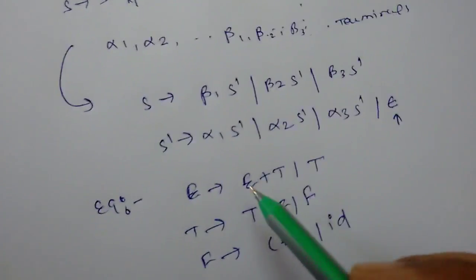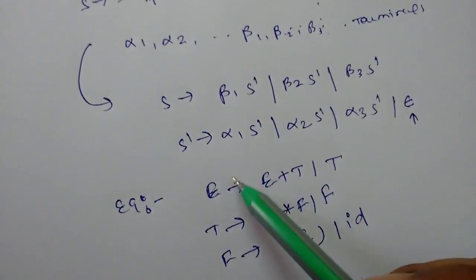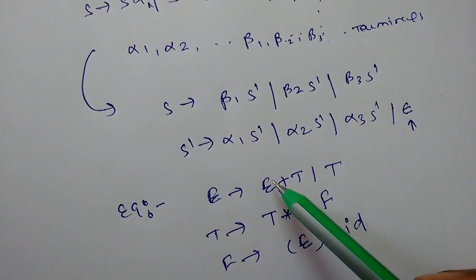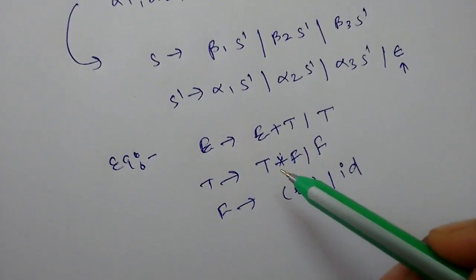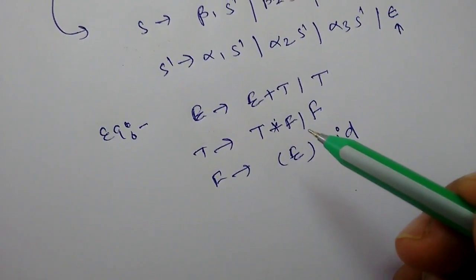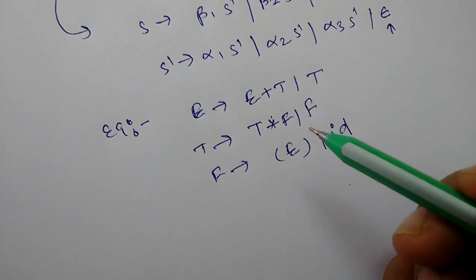So this is a left recursive grammar. This grammar contains left recursion. We can see that E is calling itself and T is calling itself. So we need to remove the left recursion from this grammar.